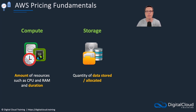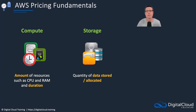With Amazon EBS — that's the Elastic Block Store, the volumes that are attached to EC2 instances — you're actually charged for the amount of allocated space. So you might create an EBS volume that's a gigabyte in size but it doesn't have much data in it, maybe just a few hundred megabytes. You still pay for the full size of that storage volume.